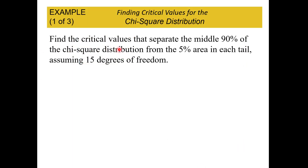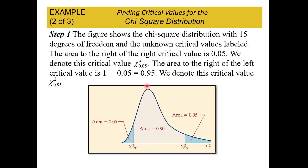Our first example: find the critical values that separate the middle 90% of the chi-square distribution from the 5% area in each tail, assuming 50 degrees of freedom. So 100% would be all of the distribution, and 5% in each tail gives us that missing 10%. This figure shows the chi-square distribution with 15 degrees of freedom and the unknown critical values labeled. On the left tail is 5% of the area under the curve, the right tail is the other 5%, and in the middle is the remaining 90%.